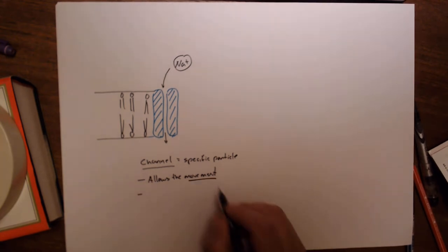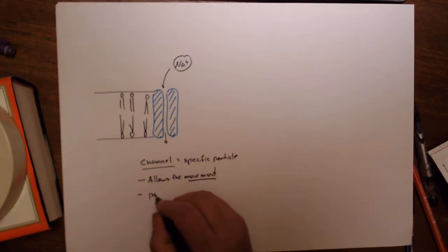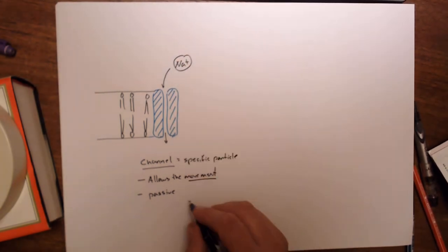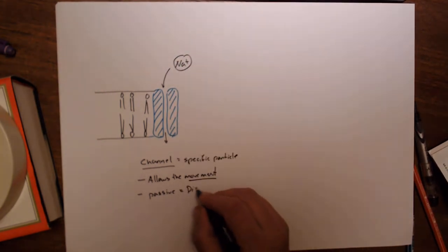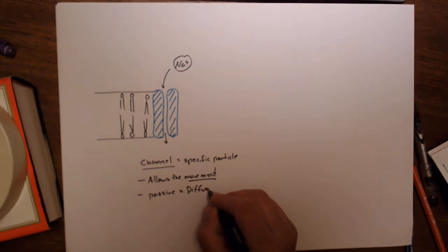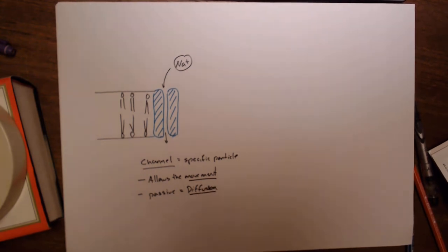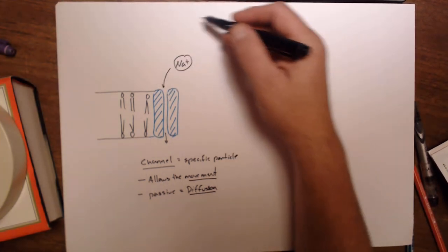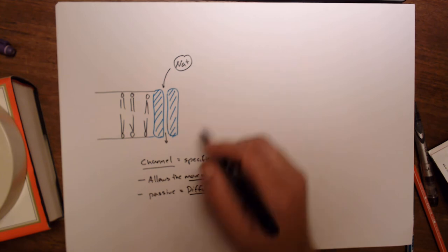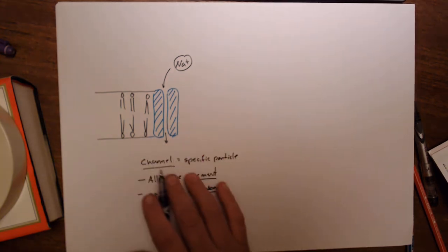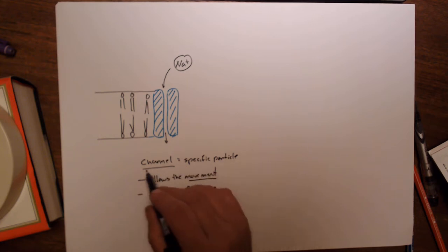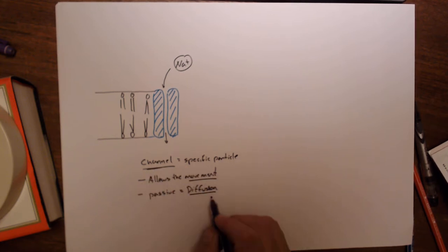Channels allow passive movement. When we talk about ions, we mean diffusion — if you have a higher concentration on one side, it's going to move through because there's a lower concentration on the other side. So channels allow for passive transport.